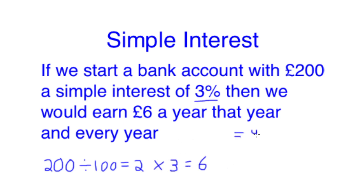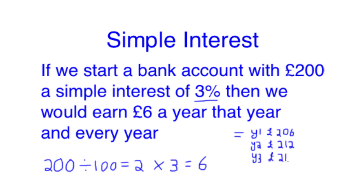We'll add this onto the initial amount invested, which is £200, giving us £206 at the end of year one. And because it's only simple interest we just add this every year after that, so we get £212 for our second year, £218 for our third year and so on.